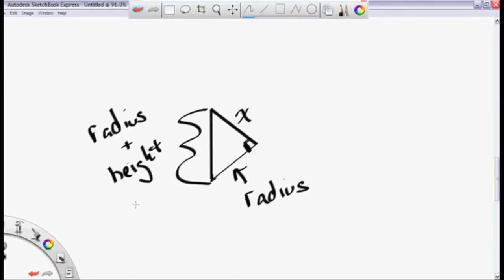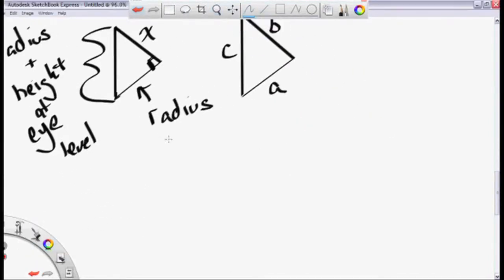So let's redraw this. What I have is a right triangle with one leg the radius, one leg the unknown, and the other the radius and the height at eye level. That's the hypotenuse.